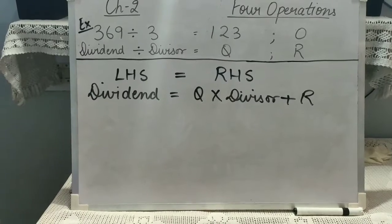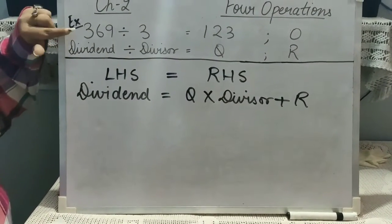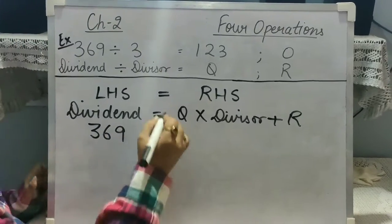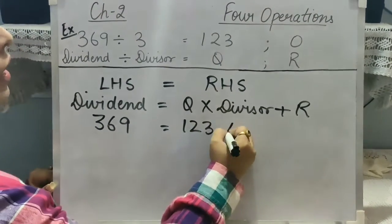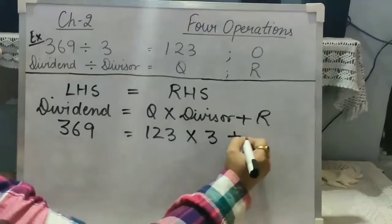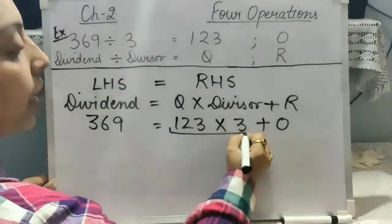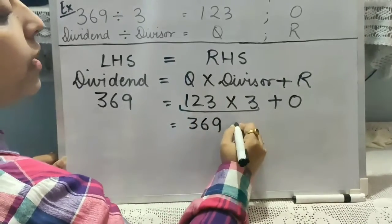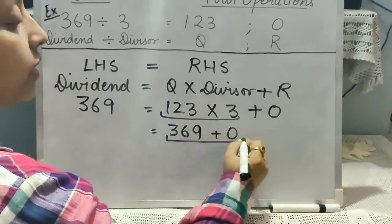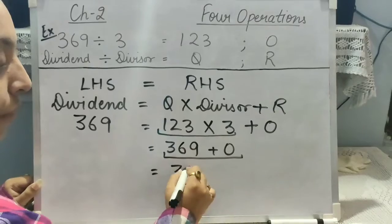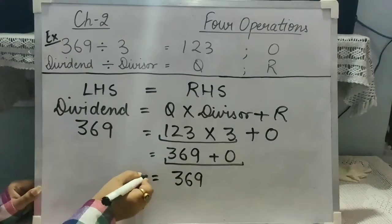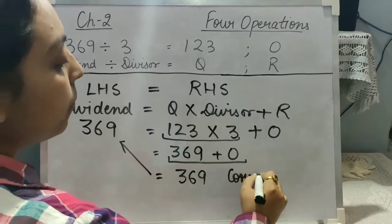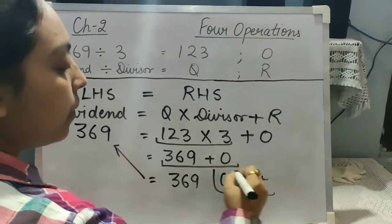So, we are going to take the previous example that we have done, in which the dividend is 369, the quotient is 123, divisor is 3 and the remainder is 0. So, first we will multiply. 3 threes is 9, 3 twos are 6, 3 ones are 3 plus 0. If we will add 0 to any number, we will get the number itself. If the RHS is equal to LHS, it means our answer is correct.